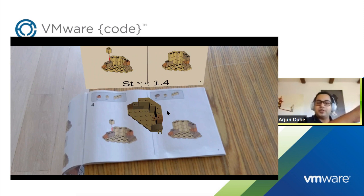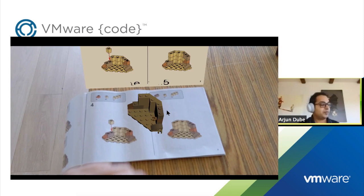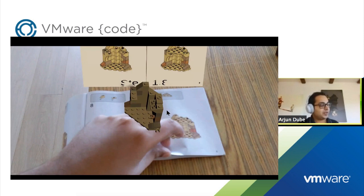If I take my finger and tap on the image on the screen of my phone, it will advance to the next step. It says now it's on step 1.5. The '1' means it's the first model in this kit, which is a little bunker, and '5' means it's sub-step five of this particular model. I can keep advancing through the pages like this and it will keep animating along.